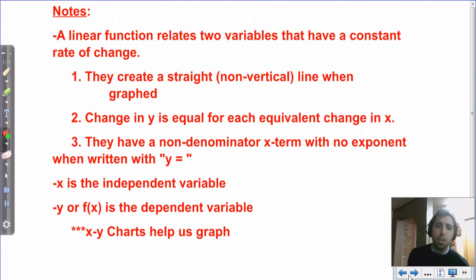Number one, create a straight, non-vertical line when we graph them. So we're going to graph a lot of linear functions, and if you're graphing a function and you don't know if it's linear, if it's a non-vertical line, remember we said vertical lines aren't functions. If it's a straight line and it's not vertical, then we've got a linear equation or a linear function. Two, the change in y is equal for equivalent change in x. So if you increase x by 3 and increase x by 3 again, then your y should change the same amount each time. That's that constant rate of change.